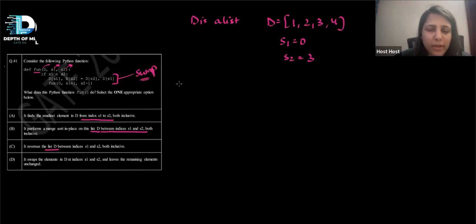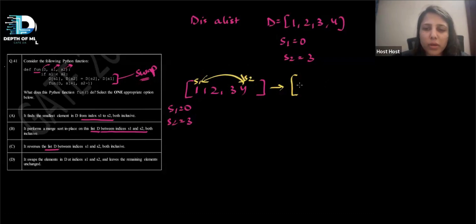So just swapping the values. So if I had a list 1, 2, 3, 4. And my S1 starts from 0 and my S2 starts from 3. So my S1 is here and my S2 is here. So what it's saying is you'd swap them. So the first iteration, what it will do is you'll swap these both. So this will become 4, 2, 3, and 1.